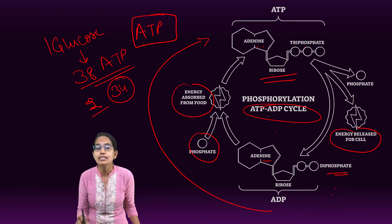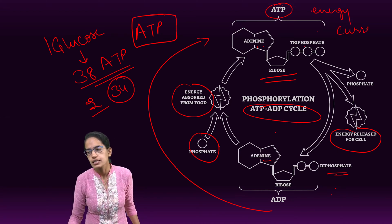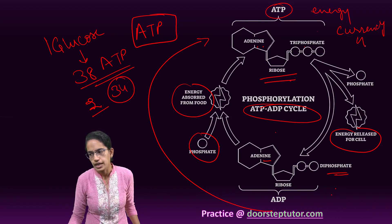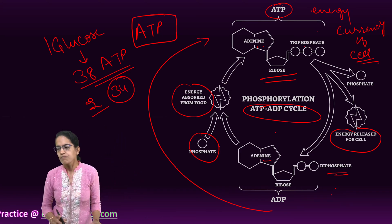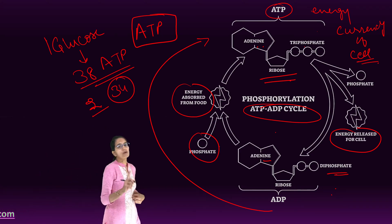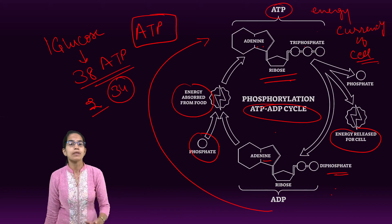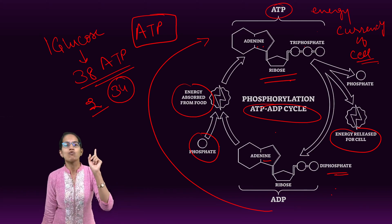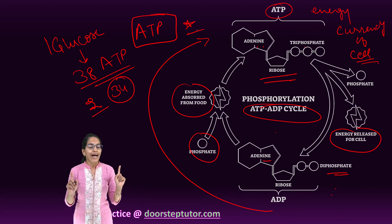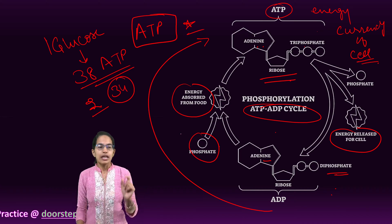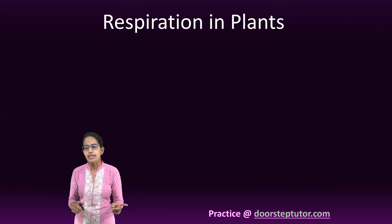ATP is called the energy currency of the cell. Each cell produces its own ATP by the process of respiration, and ATP is not transported from cell to cell. This is extremely important — each cell produces its own ATP independently. It is not transported from one cell to another, and even in higher grades students are not always able to answer this correctly.